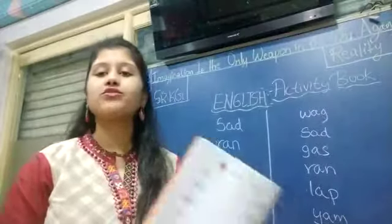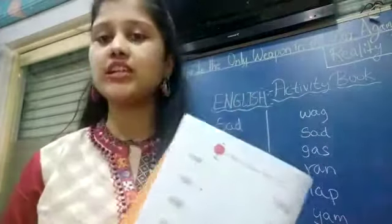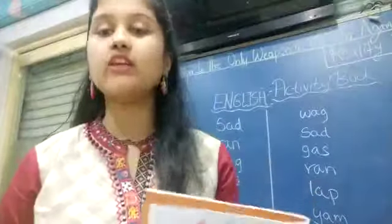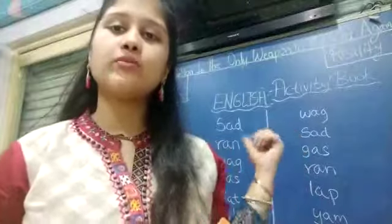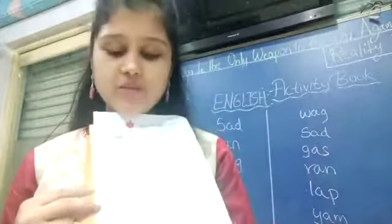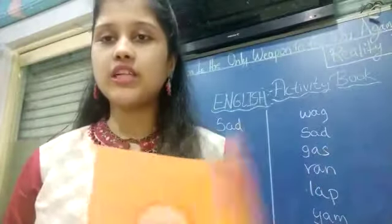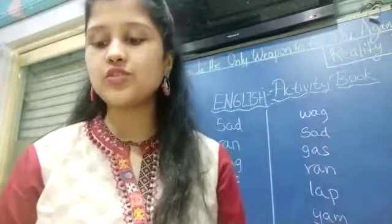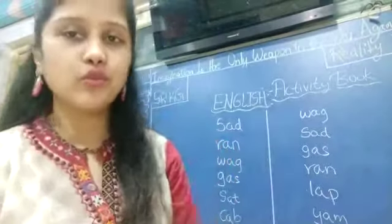So what is given over here? Match the correct word. Here you have three letter words. You have to match those three letter words correctly. So we will do this on the board. You will do page number 8 as homework. First I will show you on the board.